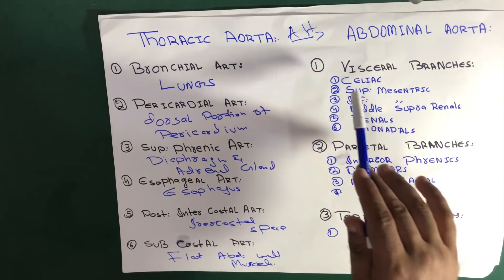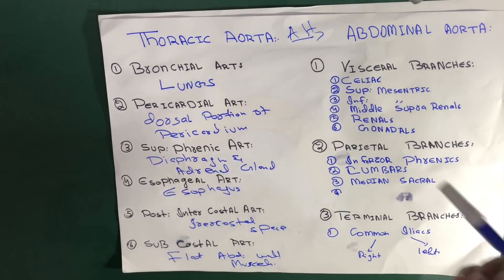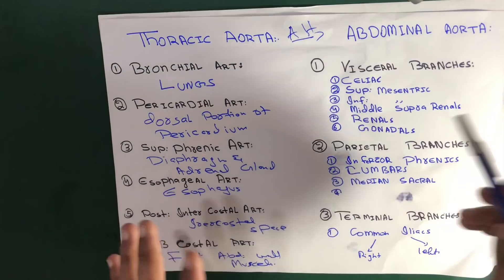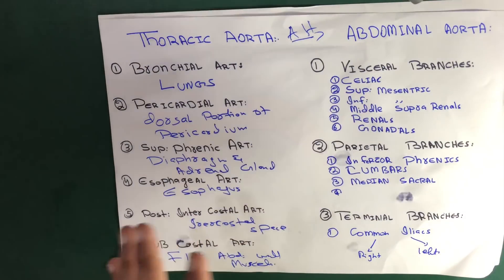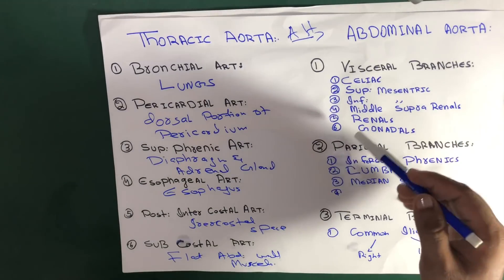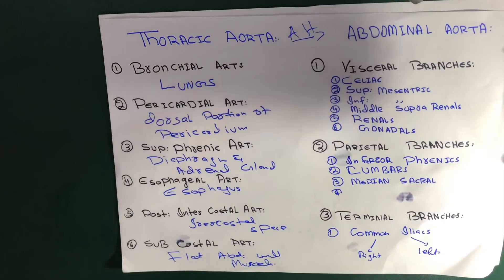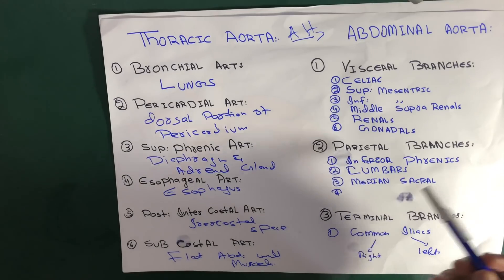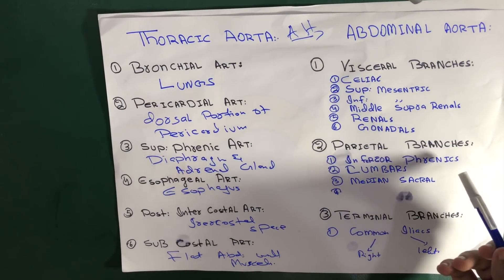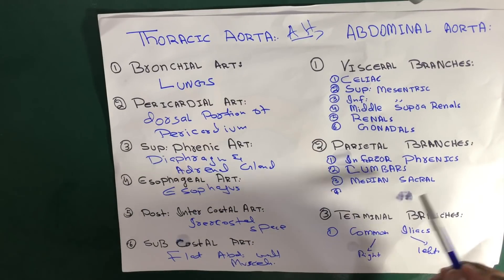The visceral branches are: (1) celiac, (2) superior mesenteric, (3) inferior mesenteric, (4) middle suprarenal, (5) renal, and (6) gonadals. The three parietal branches are: inferior phrenics, lumbars, and median sacral.